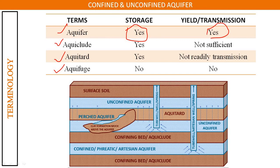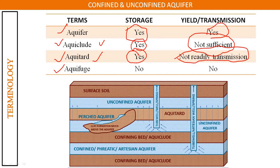Third is aquitard — it can store water but cannot readily transmit the water. Fourth is aquifuge — a layer which does not store water and does not transmit the water. It will be easier to remember these in table form.